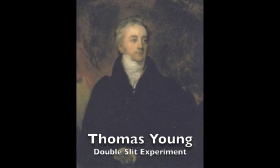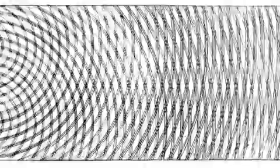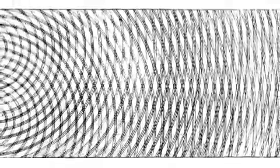Young had done an experiment many years previously called the double slit experiment. Light passing through a double slit will form an interference pattern on a screen. Rather like waves on a pond, if you throw two stones into a pond, it creates ripples.